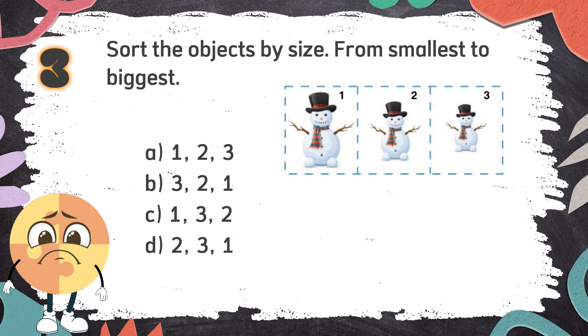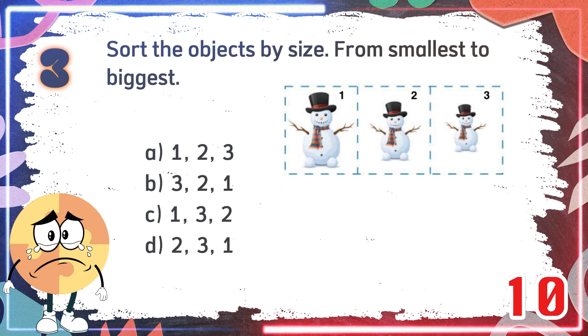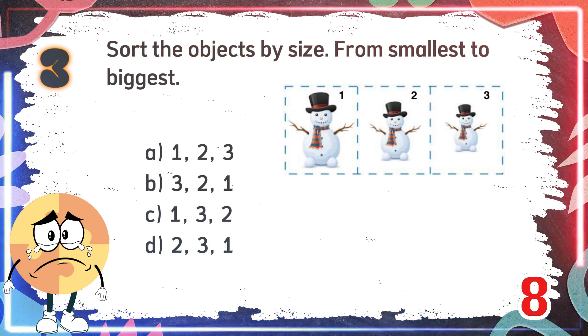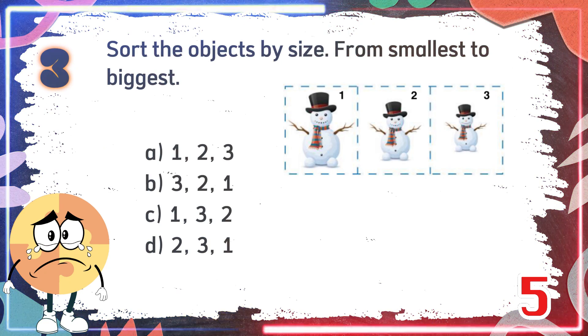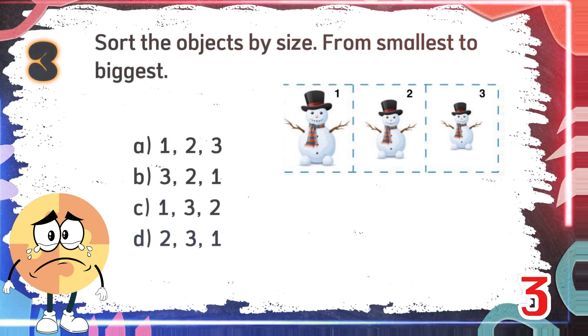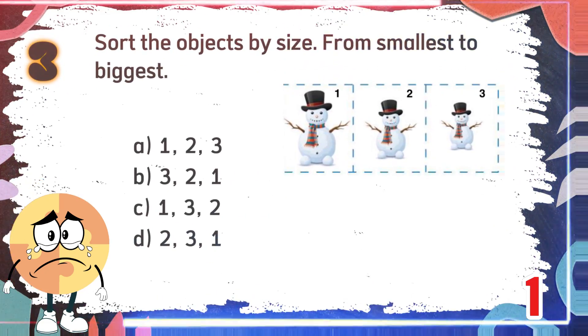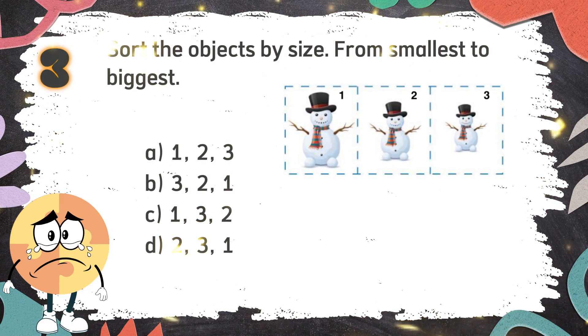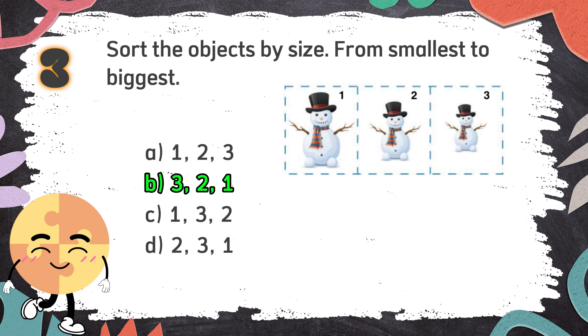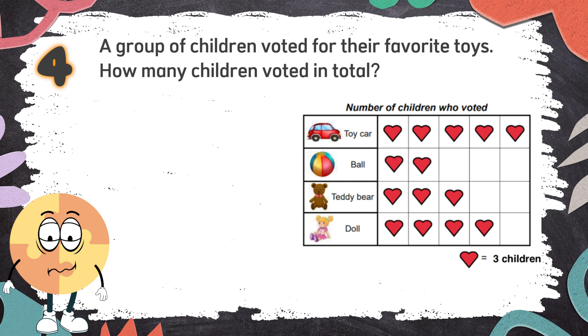Number 3: Sort the objects by size from smallest to biggest. The choices are A, 2 3, B, 3 2 1, C, 1 3 2, D, 2 3 1. The correct answer is B, 3 2 1.